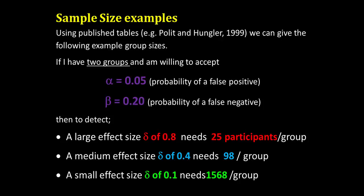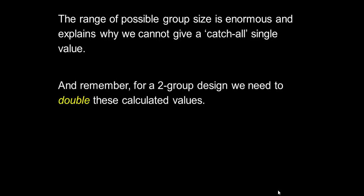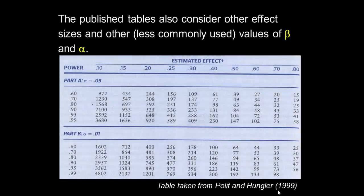You can see now the interplay - we had to make some decisions about alpha and beta. So once we decided through beta that our power was 80 percent, we still had to make some other considerations, some other guesswork. This range of possible group size is enormous and explains why we cannot simply give a catch-all single value. And the double whammy is, remember that for two group design we need to double those calculated values. Now of course we are not constrained to only having those values of alpha and beta. The published tables permit consideration of other effect sizes and other perhaps less commonly used values of beta and alpha, and again this table was taken from Polit and Hungler.